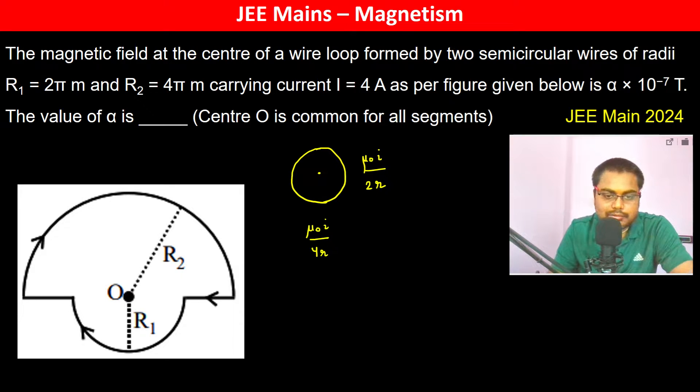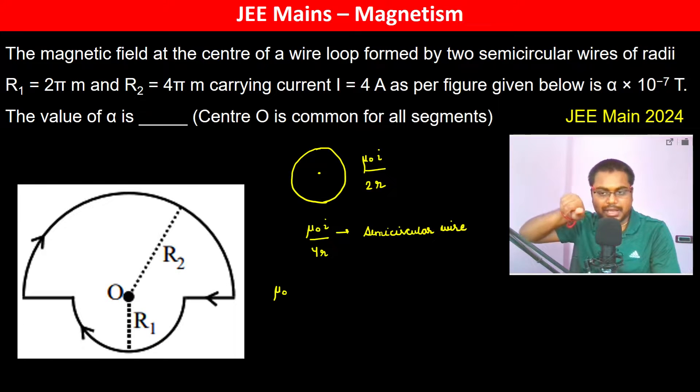So due to r1 it's going to be, this is for semicircular wire. Now since we can see here that the sense of magnetic field is going to be the same for both r2 and r1.